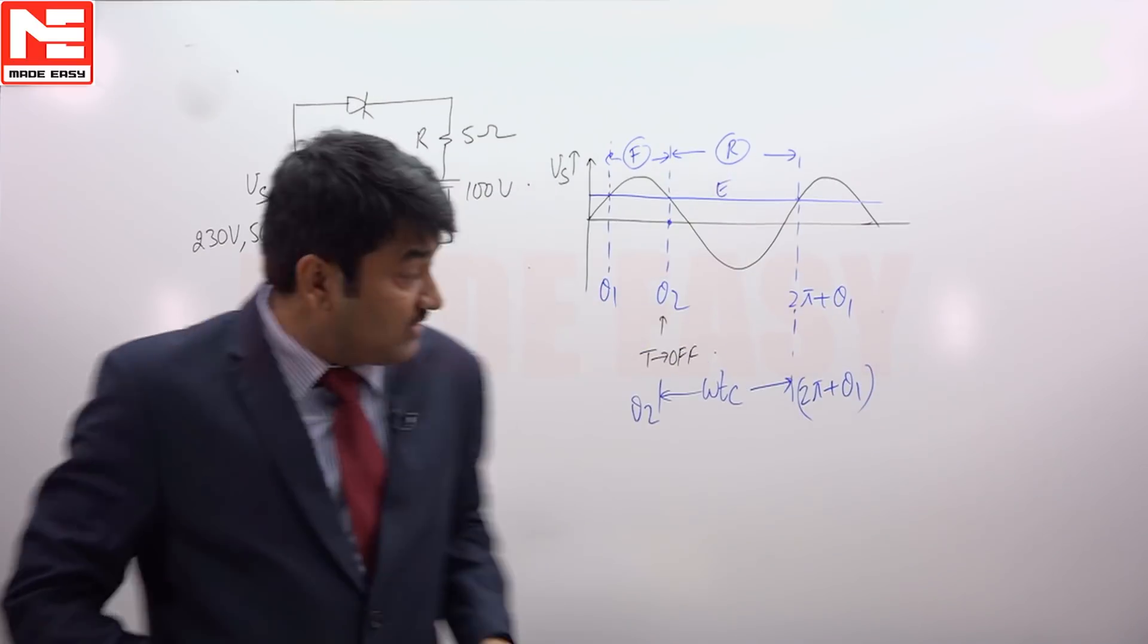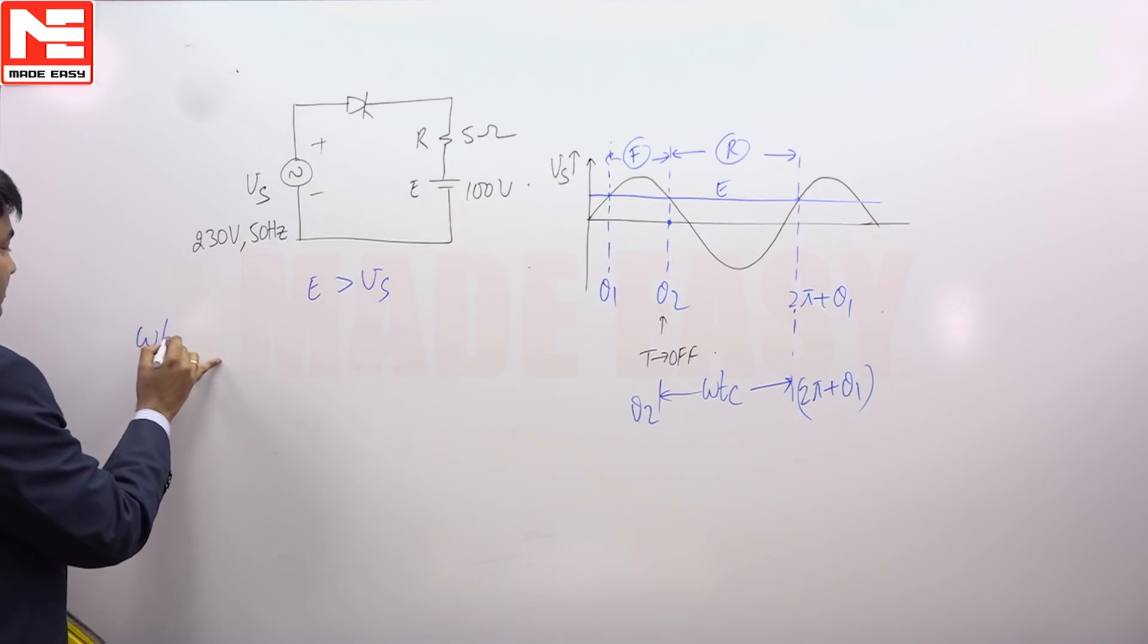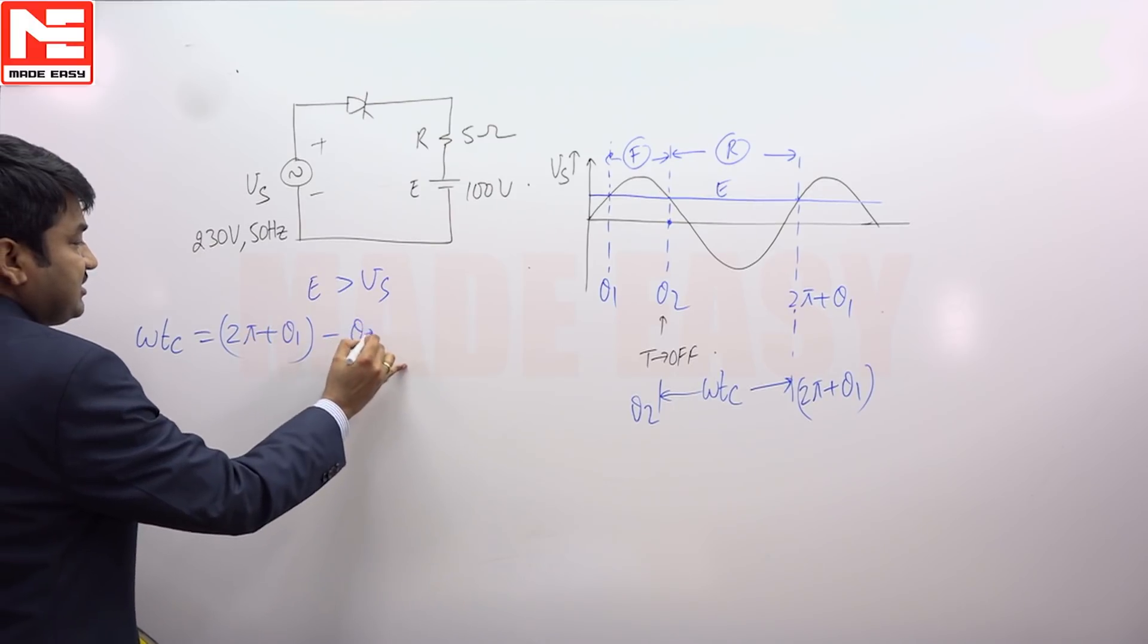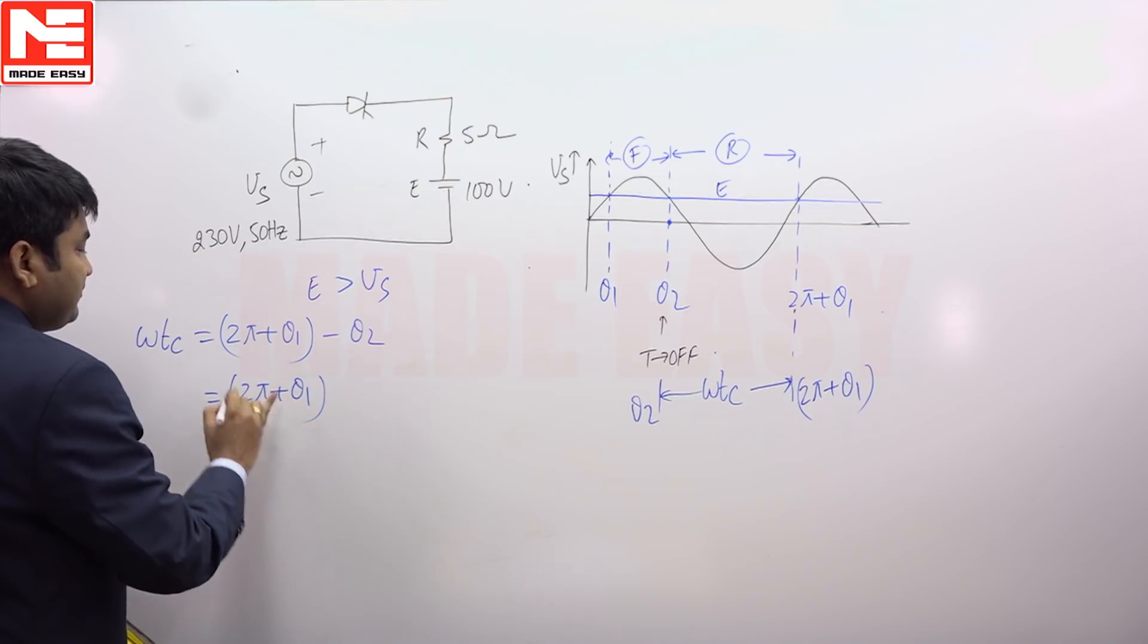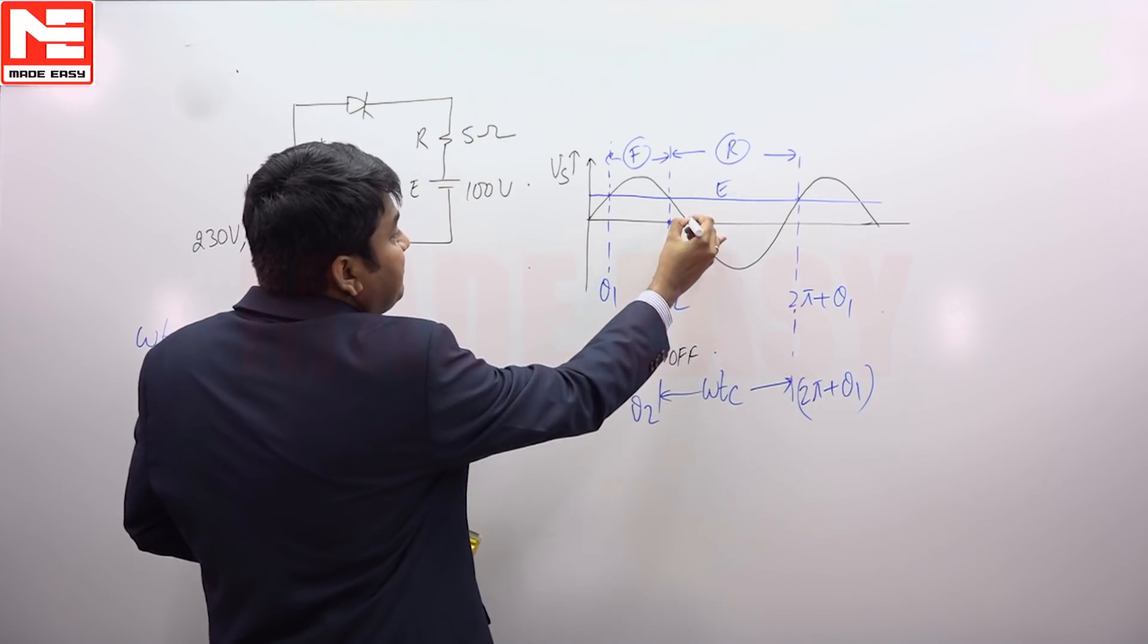So from that, we can find the circuit turn off time omega Tc is equal to 2 pi plus theta 1 minus theta 2. So 2 pi plus theta 1. So we have to express theta 2 in terms of theta 1. So this angle is pi radians.